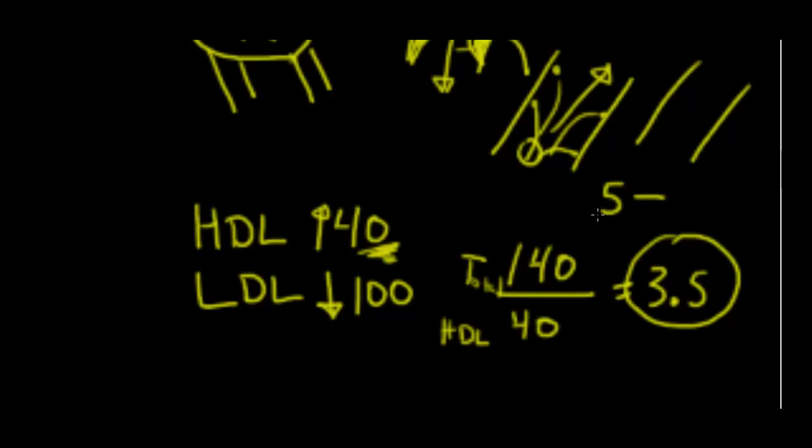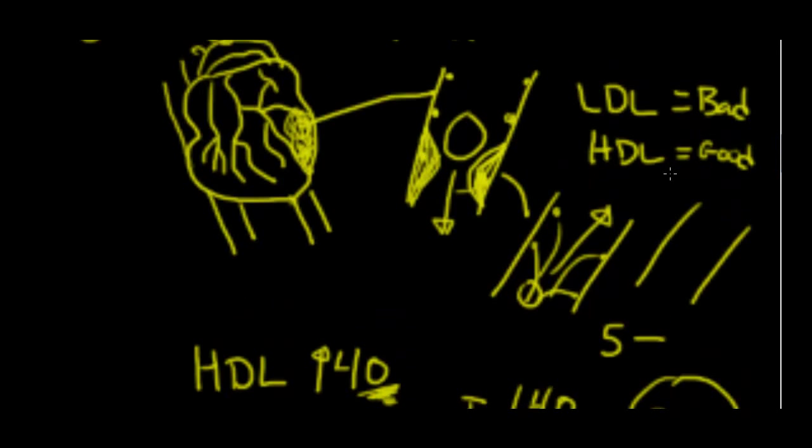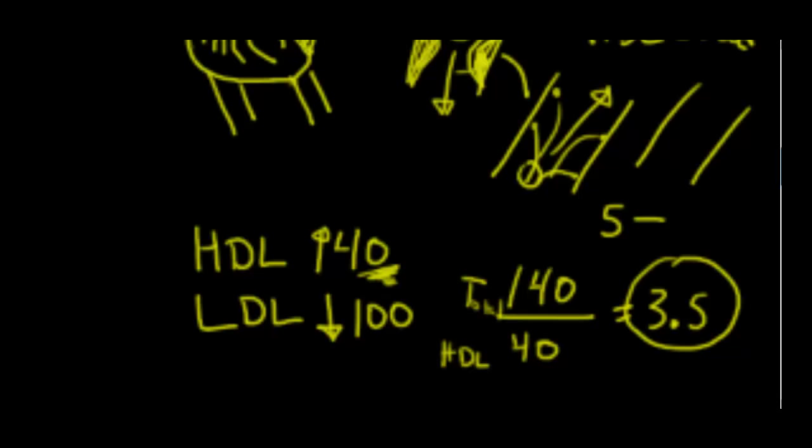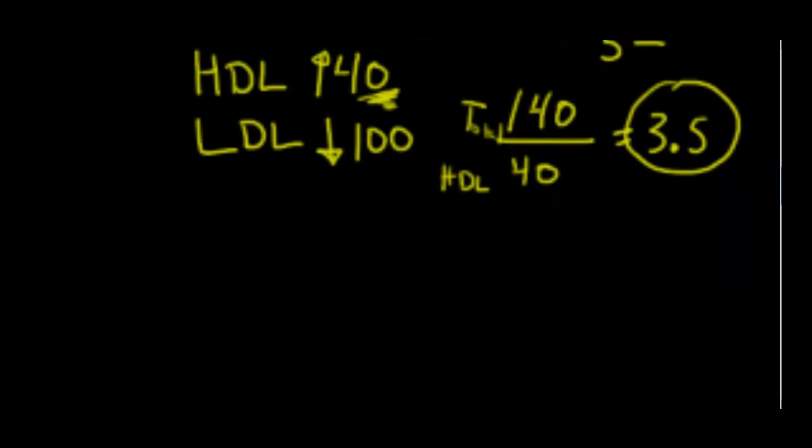Anything over 5, you're running the risk of this LDL forming plaques in your arteries because there's too much of it. You also need to look at what's called CRP, C-reactive protein. This I don't believe is mentioned in your book, but I'm going to talk about it. You want your CRP levels to be below 2.